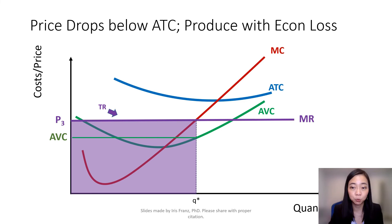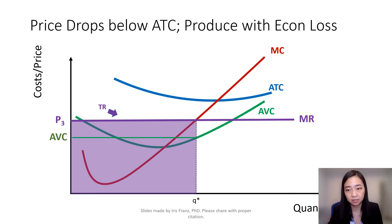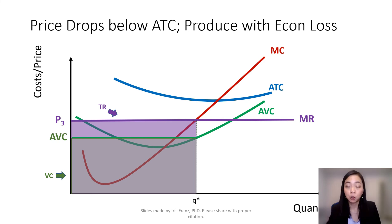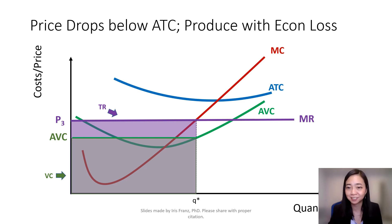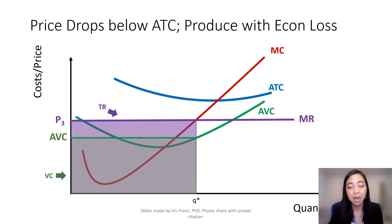And where is my variable cost? That will be average variable cost times quantity Q star, shown as the green shaded area. Now you can see that as long as the price is higher than average variable cost, my total revenue can cover my variable cost, which means I should continue to produce.